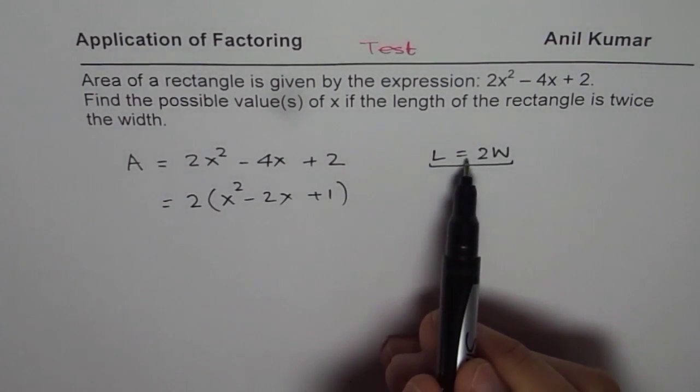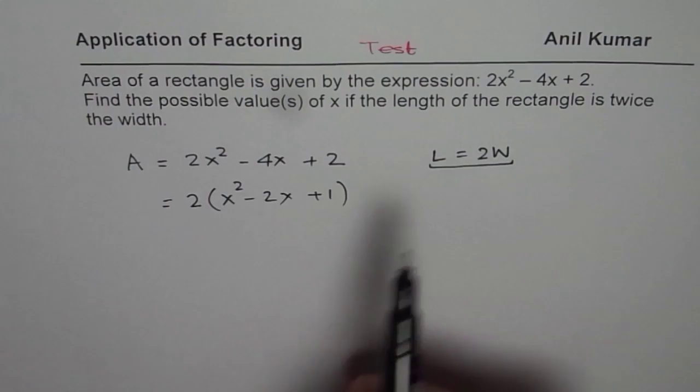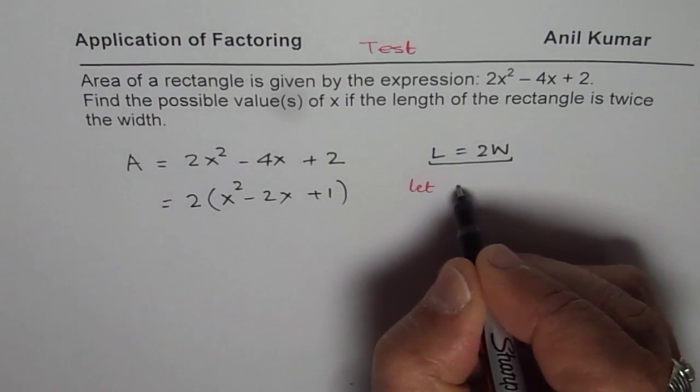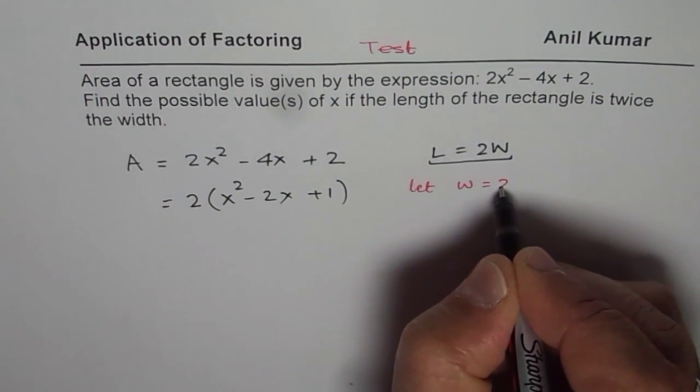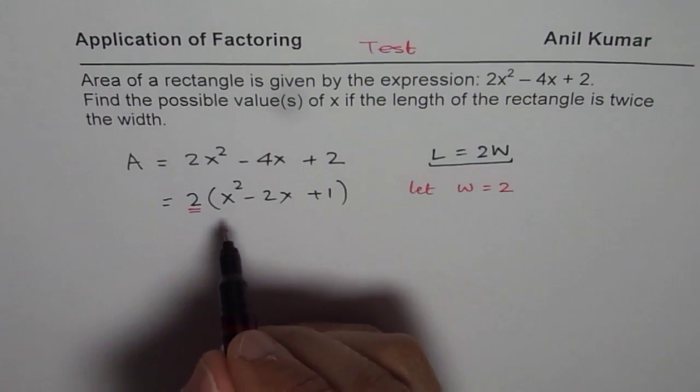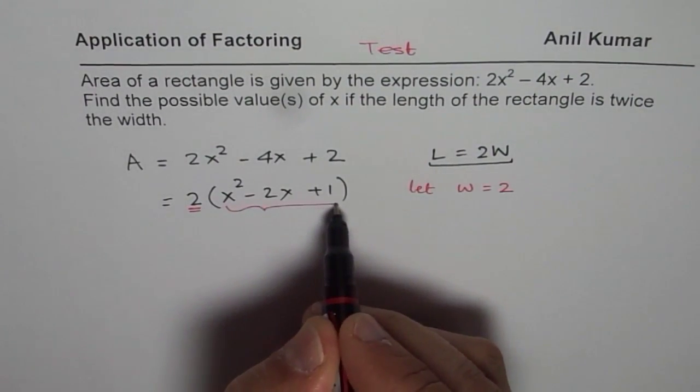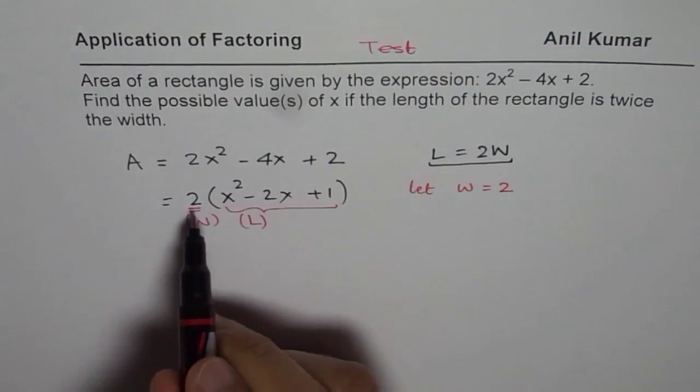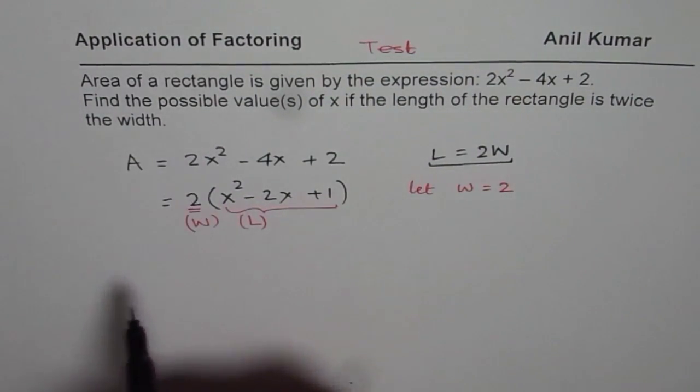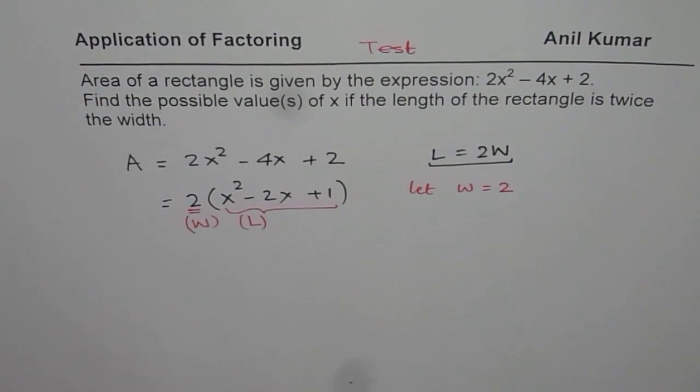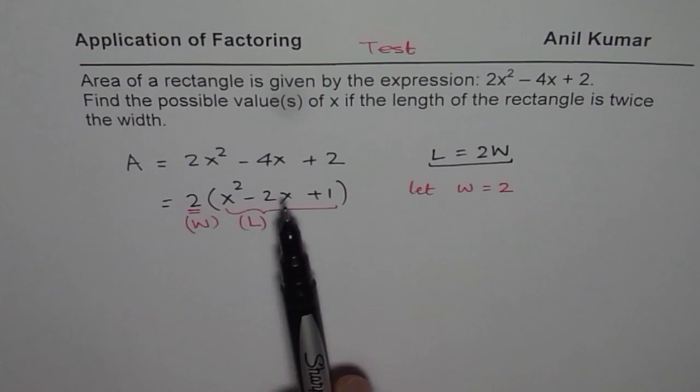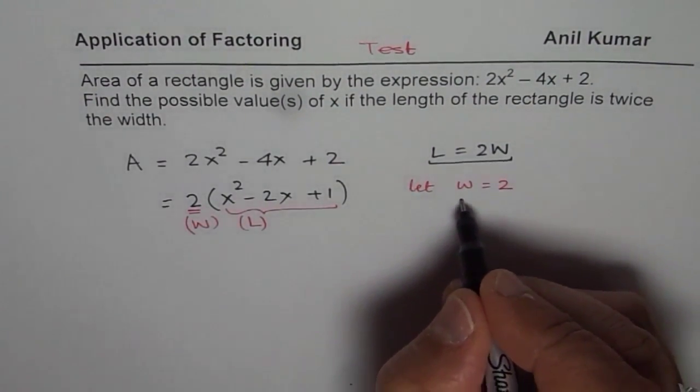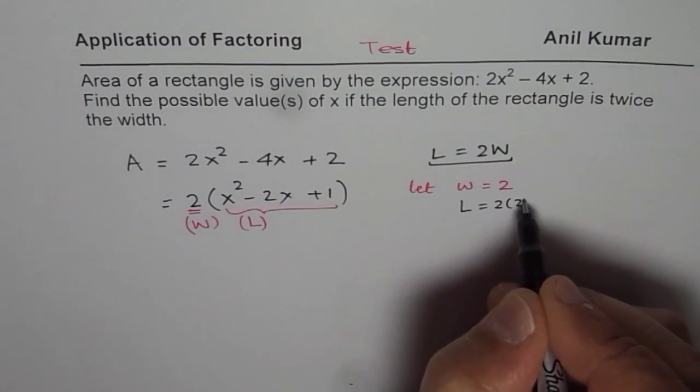Now we say length is twice width. So we can take that this as the width. So we can say that let width equals to 2. So let this be width for us. In that case that is going to be length. So it is width times length. So when we take w as 2, in that case length will be all this. But we also know that all this should be 2 times width. So if width is 2, then we know length is 2 times 2, which is 4.